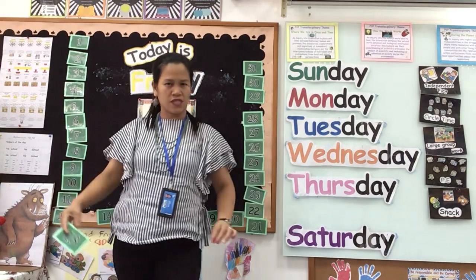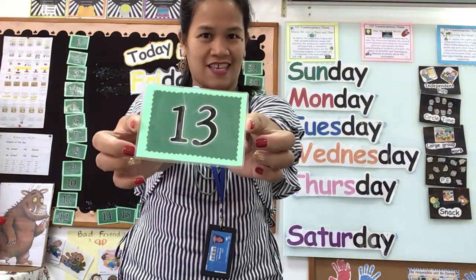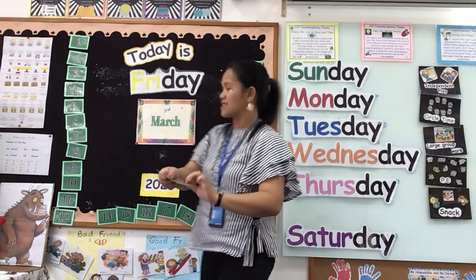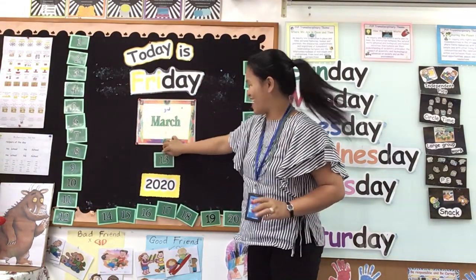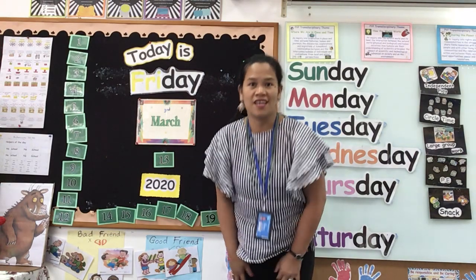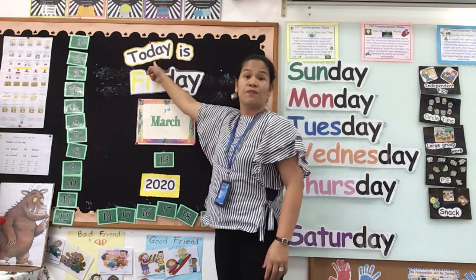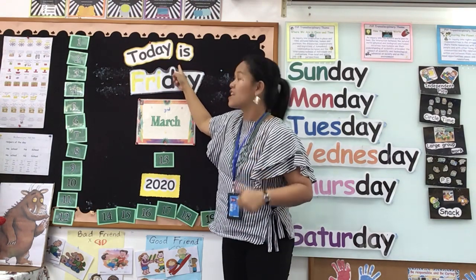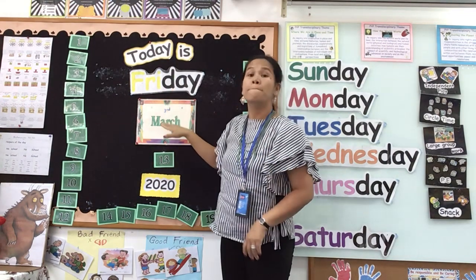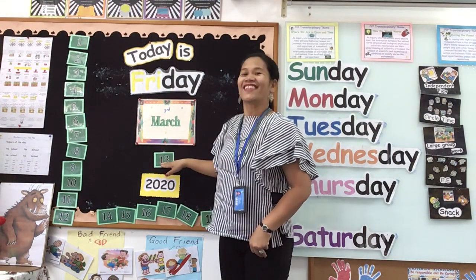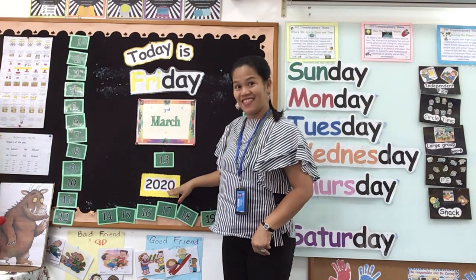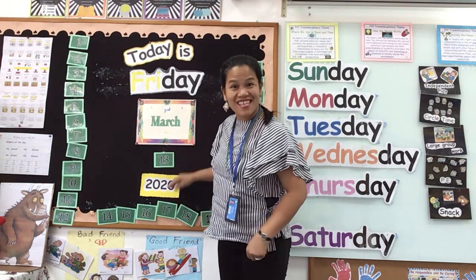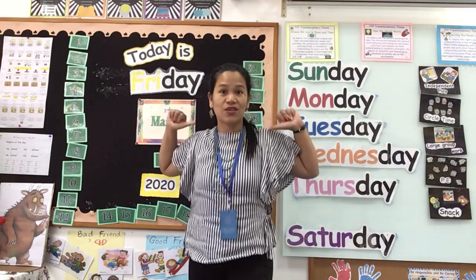So how does 13 look like? Yes, one and three. Very good. One and three — so this is 13. Let's put 13 up here. Now, can we read our calendar? What day is it today? Today is Friday, March 13, 2020. Yes! Very good. You did it.